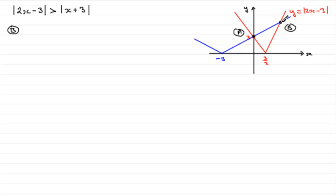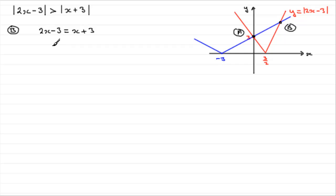To find point B, we want the intersection of the red and blue graphs. This part of the red graph is the positive value of 2x minus 3. The blue graph in this section is the positive part of x plus 3. So we set 2x minus 3 equal to x plus 3. Subtracting x and adding 3 to both sides gives x equals 6. So this point is at x equals 6.